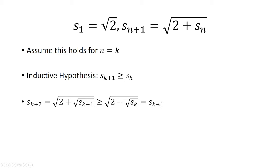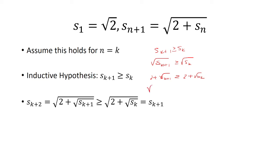We compare that with s_{k+1}, which is the square root of 2 plus the square root of s_k. We know that s_{k+1} is greater than or equal to s_k, so if we take the square root of both sides that still holds, because s_k is positive since we're just taking the square root of positive numbers. We can then add 2 to both sides and take the square root of both sides. So s_{k+2} is greater than or equal to s_{k+1}, which completes the proof.